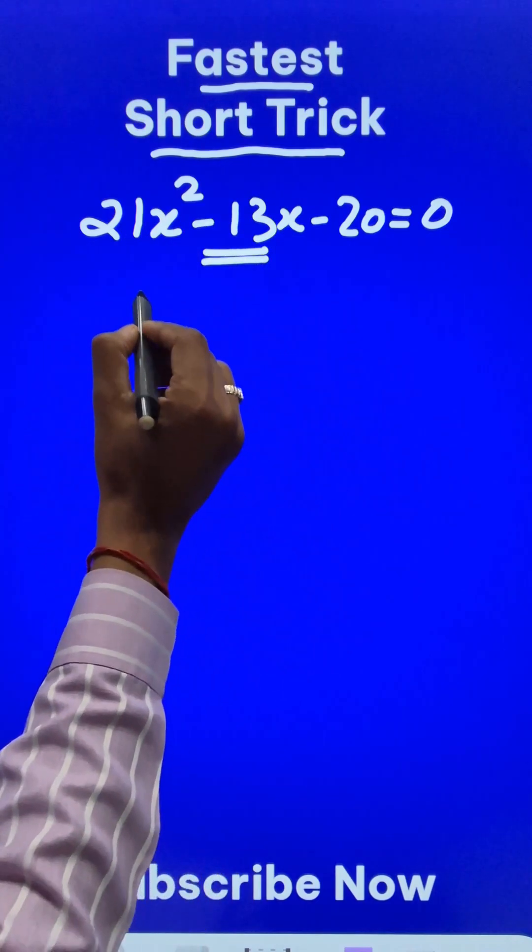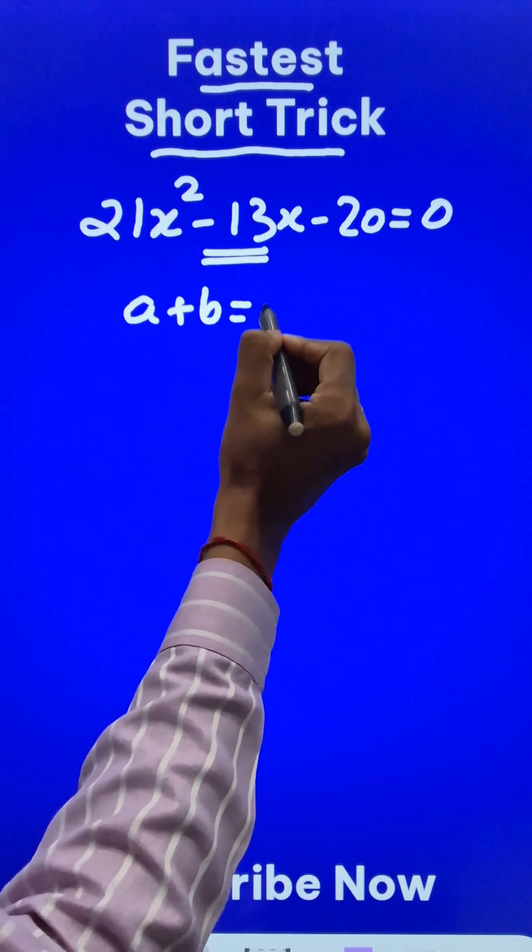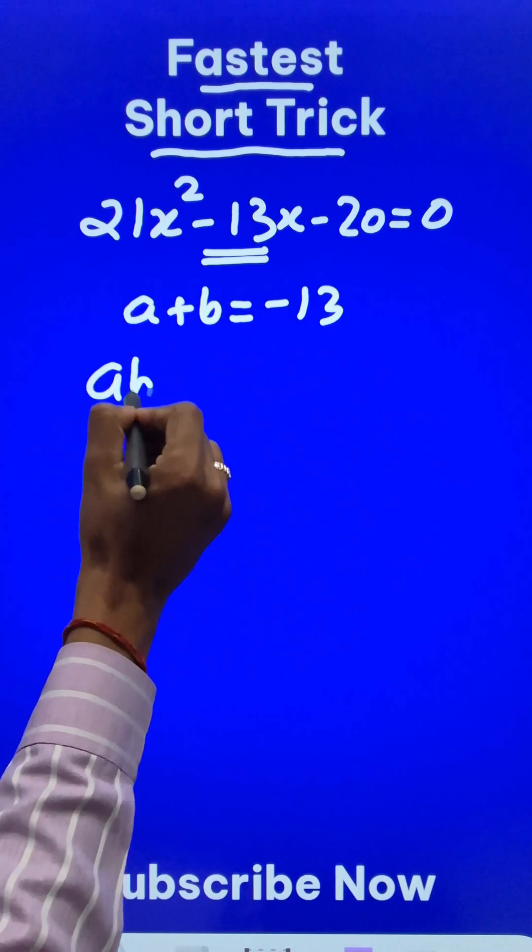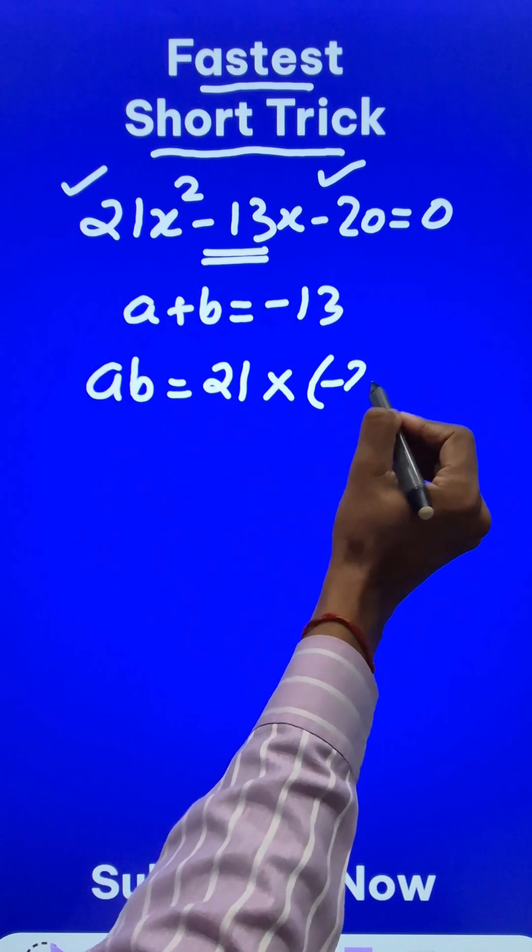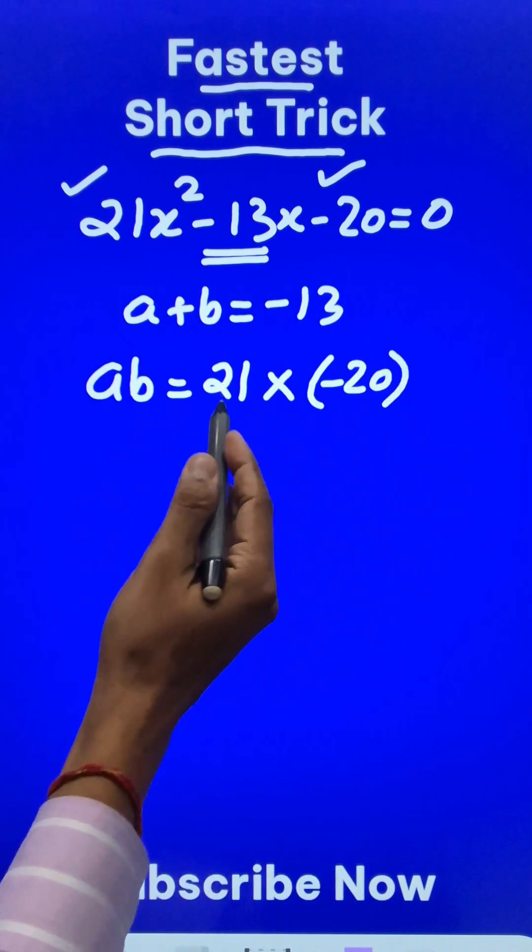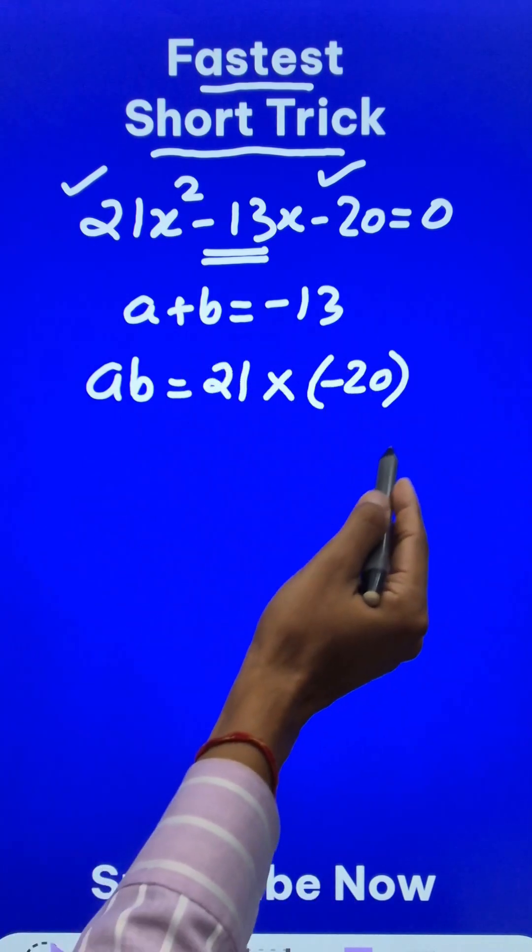The sum has to be this middle number, right? a + b = -13, and the product has to be the product of the coefficient of x², which is 21, and the constant term, which is -20. If you multiply these two, it's going to be a huge task because this will give you a big number.